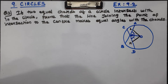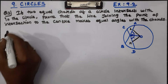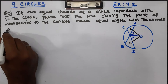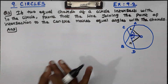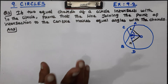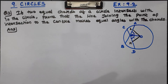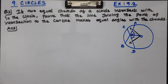Students, here is how to answer questions on lines and angles, circles, triangles, and quadrilaterals. There are 3 steps: Step 1 — Given; Step 2 — To Prove; Step 3 — Proof. And for circles, one extra step: Construction.